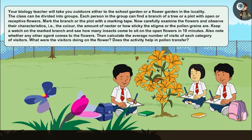Keep a watch on the marked branch and see how many insects come to sit on the open flowers in 10 minutes. Also note whether any other agent comes to the flowers. Then calculate the average number of visits of each category of visitors.